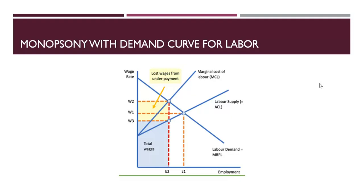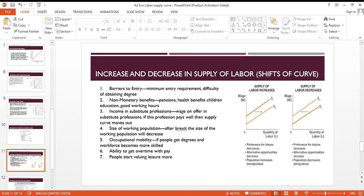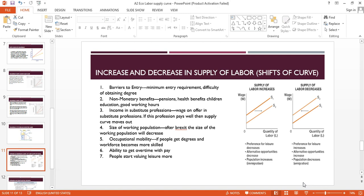This was a revision of what we did previously. Now, the supply curve can shift — there are determinants of the supply of labor. When there are barriers to entry, such as minimum entry requirements — for example, previously anyone could teach, but now you must have a degree — the supply goes back. Even with wages unchanged, strict entry requirements reduce the supply of workers in the market.